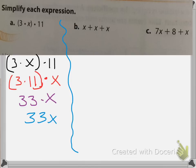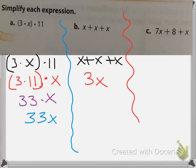Now for the next problem, we started with x plus x plus x. When we have x plus x plus x, all we're going to do is add those three x's together. So x plus x is 2x, plus one other x is going to give you 3x. And that's really all there is for that problem. For A, 33x was our answer. For B, 3x was our answer.